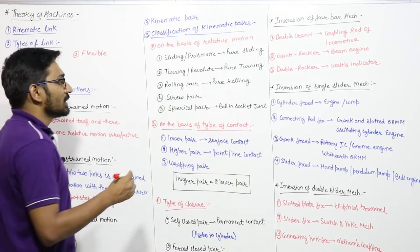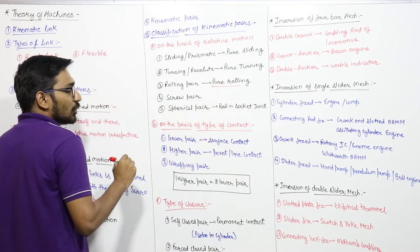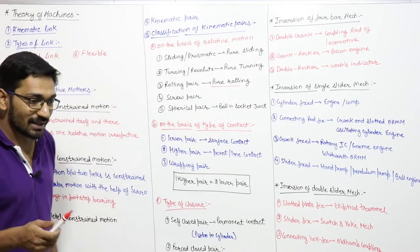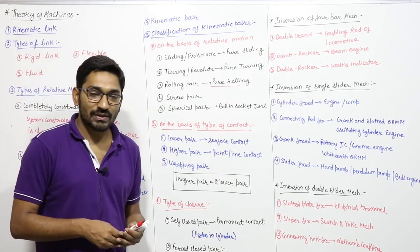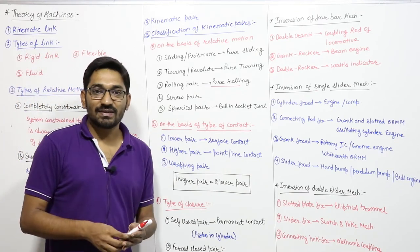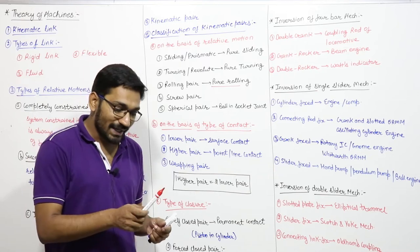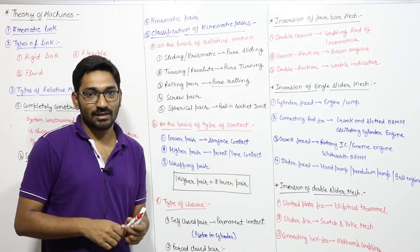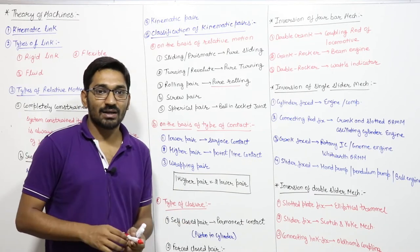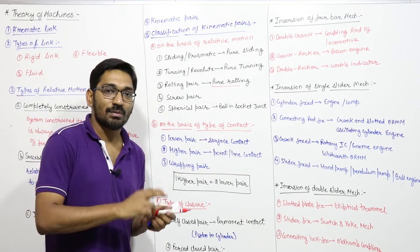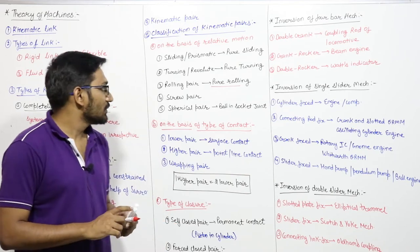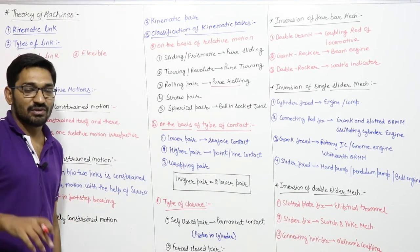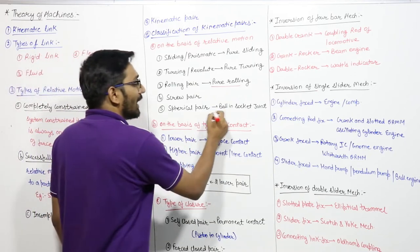Next is the rolling pair — the motion is pure rolling. Next is the screw pair, just like a nut and bolt. In a nut and bolt there are two motions: rotation and sliding. However, if you give rotation to the bolt, the sliding is dependent on the rotation. So only one is independent; that is why it is also a kinematic pair.